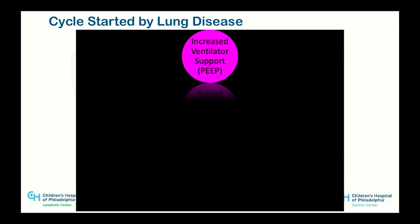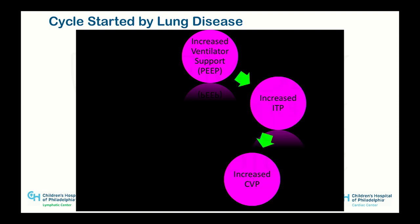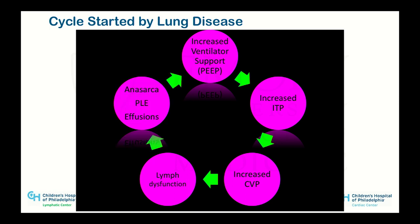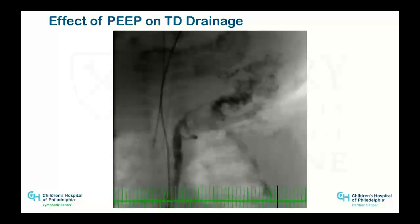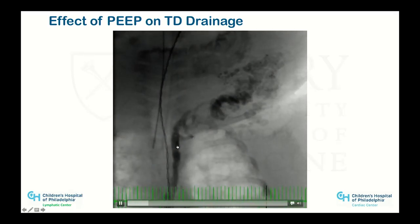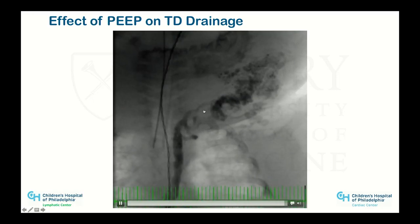CVP and respiratory intrathoracic pressure matter a lot — especially in babies but also in adults. Increasing PEEP or intrathoracic pressure affects two things: it increases CVP, increasing the afterload on the lymphatic channels, and also increases preload on the liver. That ultimately leads to lymph dysfunction, anasarca, and effusions. This is a baby with no cardiac disease but bad lung function, on high PEEP of about 16. You can see the thoracic duct is dilated and tortuous — it looks like an adult heart failure duct.